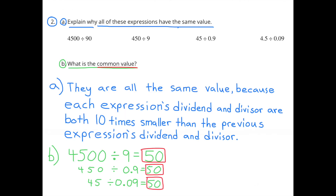Number 2A: Explain why all of these expressions have the same value. They are all the same value because each expression's dividend and divisor are both 10 times smaller than the previous expression's dividend and divisor. Part B: What is the common value? The common value is 50. 4,500 divided by 9 is 50; 450 divided by 9 tenths is 50; and 45 divided by 9 hundredths is also 50.